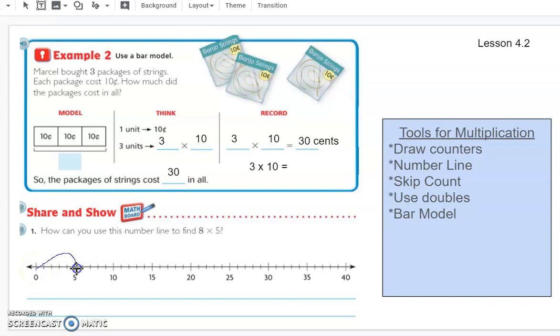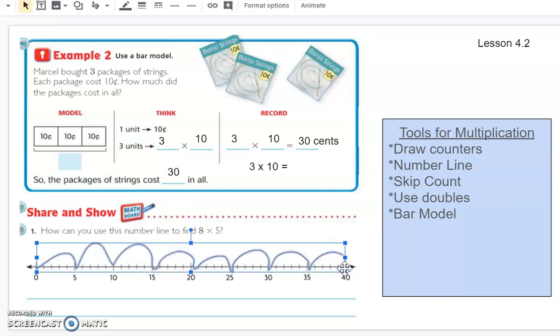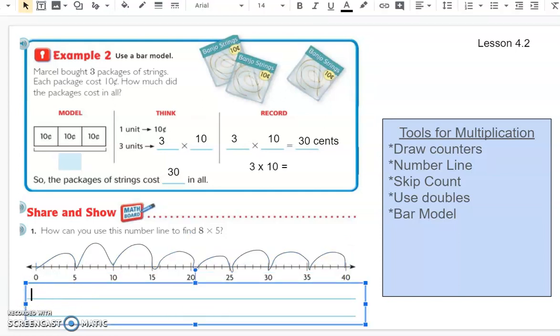So five, two, three, four, five, six, seven, eight. That time it stayed. So we landed at 40. Now we can also just count in our mind. Obviously we wouldn't be using a number line for this if we're trying to find out a problem really quickly. And so we would count by five, eight times just in our mind. And now we're going to answer our question. How can you use this number line to find eight times five?